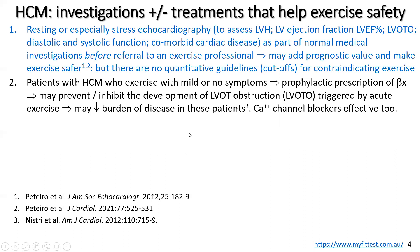There has been a fairly recent report, now part of clinical practice, that patients with hypertrophic cardiomyopathy who engage in regular exercise but have mild or no symptoms may benefit from prophylactic prescription of beta blockers. This may prevent or inhibit the development of left ventricular outflow tract obstruction triggered by acute exercise — a single session — and the research shows this may reduce the burden of disease. Elsewhere there is also quite a lot of information on calcium channel blockers being effective in terms of overall pathophysiology and exercise physiology for these patients.